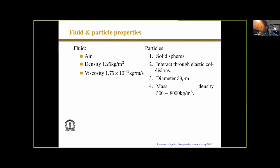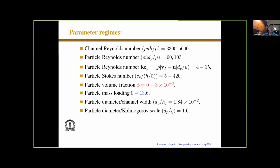The simulation parameters: particles are solid spheres that interact through elastic collisions. For comparison to real systems, the particle diameter for our parameters would be approximately 40 microns, with mass density about 500 to 8000 kg/m³. The particle Reynolds number is about 4 to 15, so the Schiller-Naumann correlation applies. There is a big difference between the particle Reynolds number based upon the average flow velocity, which is 60 to 103, and the particle Reynolds number based upon the average relative velocity between the particle and the fluid, which is much smaller. The drag force is based on this relative-velocity Reynolds number.